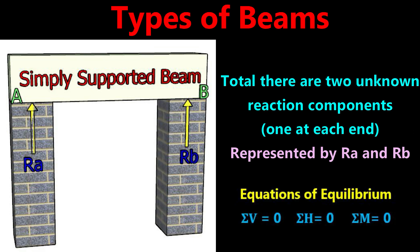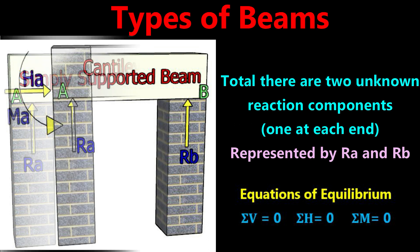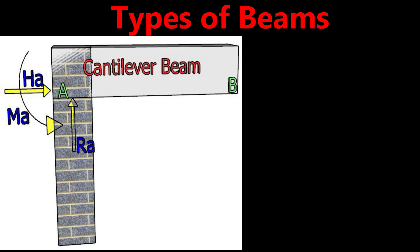The equilibrium equation used to find the unknown reaction force is: the sum of forces in the vertical direction equals zero. This equation is used to find the unknown reaction force in a simply supported beam. Simply supported beam structures can be seen in stone temples and temporary construction works.